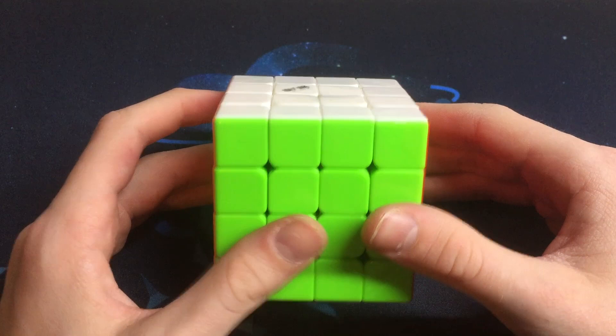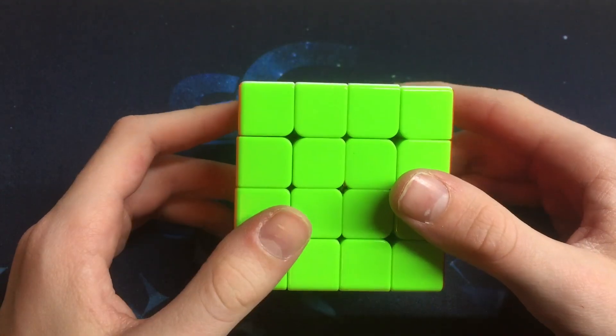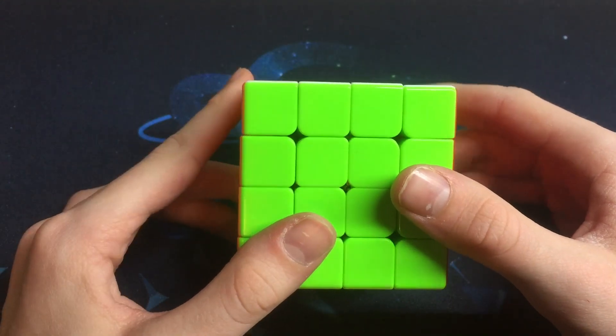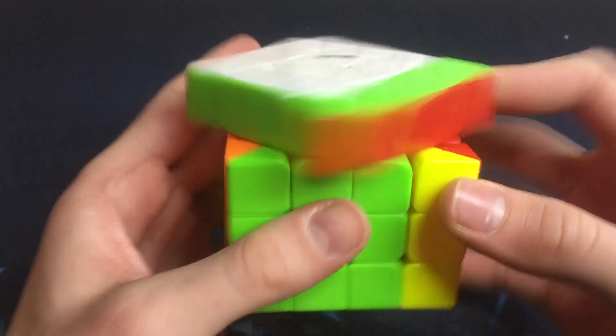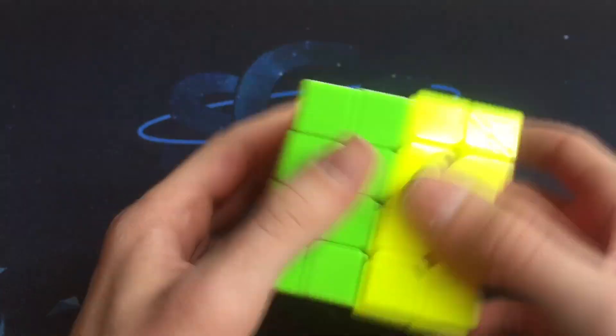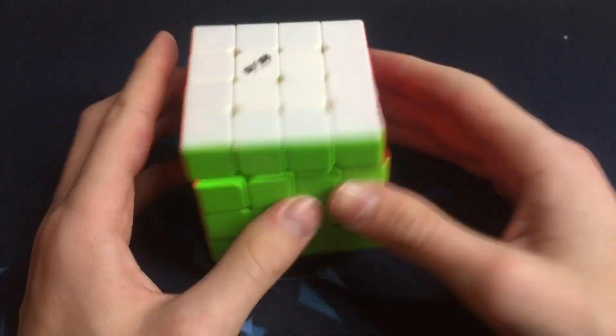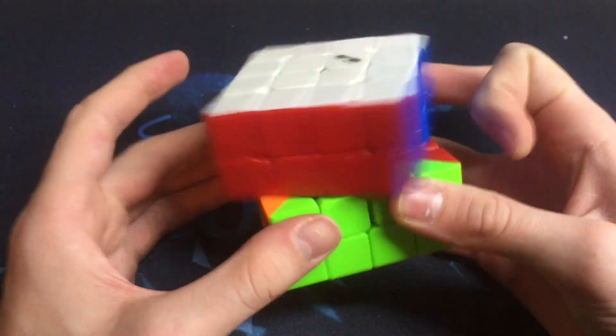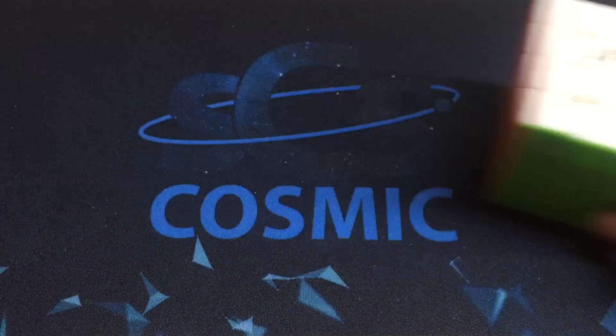So this is an Aosu. It actually has a compressed spring mod on to it. However, it didn't really turn out well. The outer layers are really nice. However, the inner layers are very sluggish and I don't like them at all.